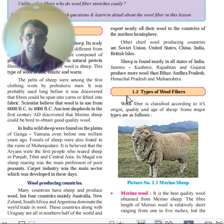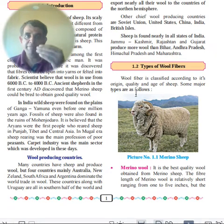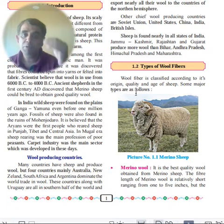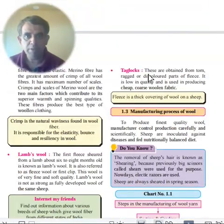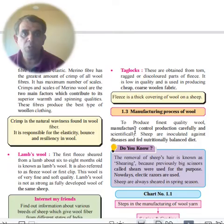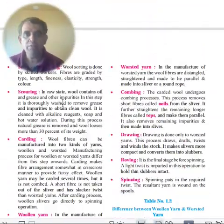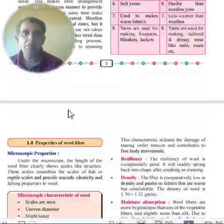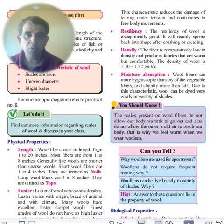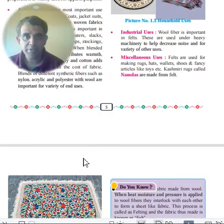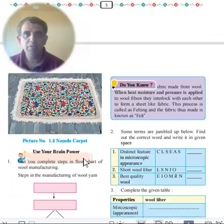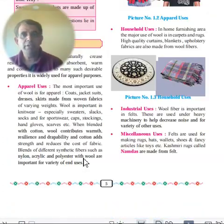MCQs will be framed from this chapter for exam revision. The chapter structure is: 1.2 Types of Wool Fibers, 1.3 Manufacturing of Wool, 1.4 Properties of Wool Fiber, and 1.5 Uses of Wool. It is a small but important chapter.